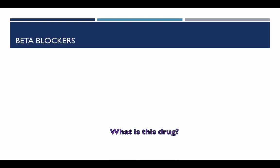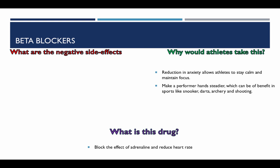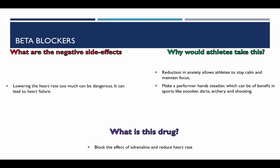Beta blockers. What is this drug? They block the effect of adrenaline and reduce heart rate. The reduction in anxiety allows the athlete to stay calm and maintain focus, and makes the performer's hands steadier, which can benefit sports like snooker, darts, archery, and shooting. What are the negative side effects? Lowering the heart rate too much can be dangerous and can lead to heart failure.